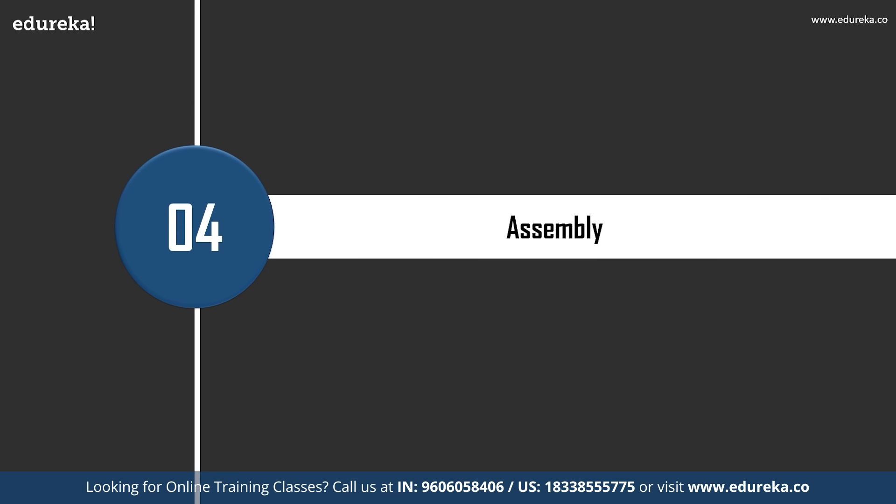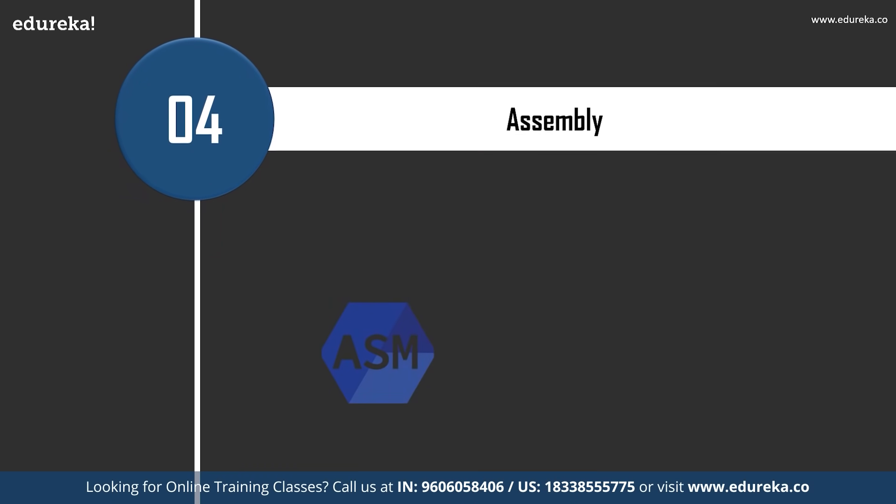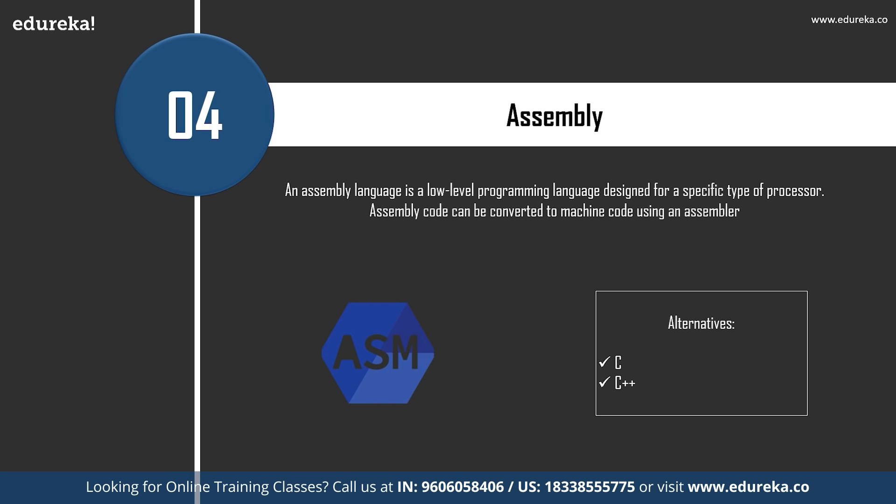Moving on to the fourth dying programming language on the list, we have Assembly. Assembly language is a low-level programming language designed for a specific type of processor. It may be produced by compiling source code from a high-level programming language such as C or C++, but can also be written from scratch. Assembly code can be converted to machine code using an assembler. Some of the alternatives to Assembly are C and C++. C syntax is easier to learn than assembler syntax and is also easier to use for making more complex programs. Learning C and C++ is more productive than learning assembler because there is a lot more development activity around C than assembler.